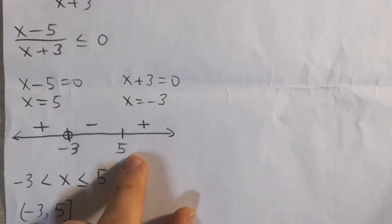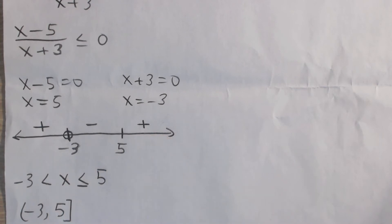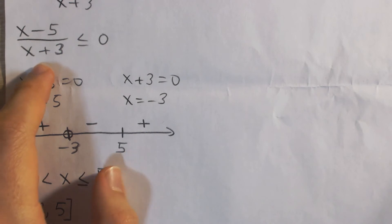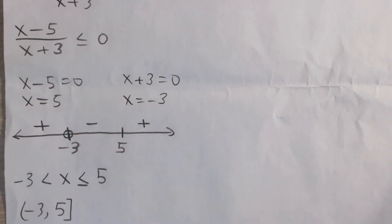And to the right of 5, that's another critical point. Say just test a large positive number, let's say like 20. Well, we're going to get a positive number in the numerator, positive number in the denominator, so we get a positive number.